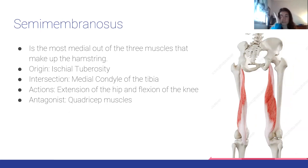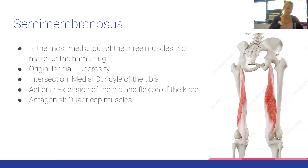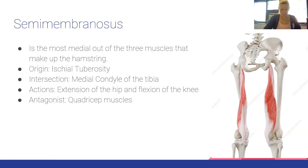The semimembranosus is the most medial of the three hamstring muscles. Origin: ischial tuberosity. Insertion: medial condyle of the tibia. Actions: extension of the hip and flexion of the knee. Antagonist: quadriceps muscles.